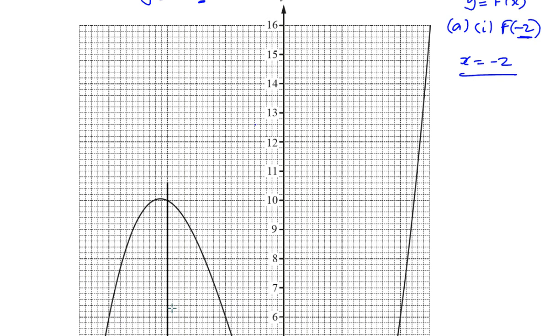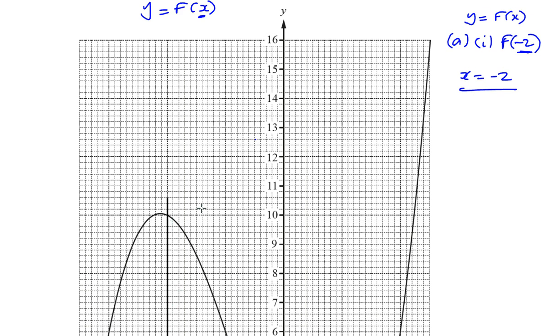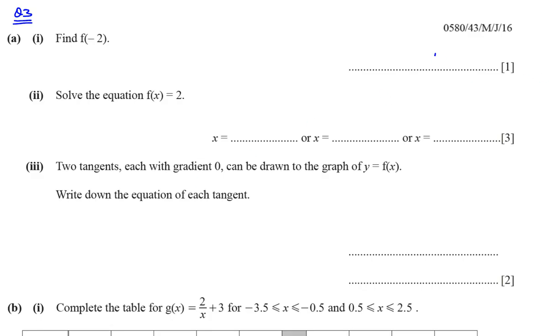Now, when x equals minus 2, the value of the function f is going to be given by that value there, which is 10. So, the value of f(-2) is equal to 10. So, we go back. f(-2) is equal to 10.